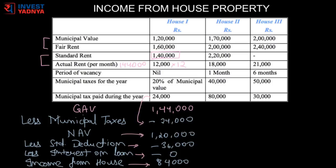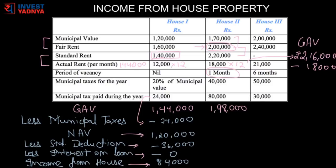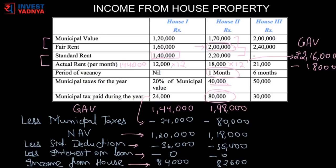In the second scenario, the ideal rent should be the higher of these, which is Rs 2,00,000 as standard rent is higher. But actual rent is Rs 18,000 x 12, which is Rs 2,16,000, and this is higher than Rs 2,00,000, so it should be taken as gross annual value. But there is one month's rent loss due to vacancy, and hence Rs 18,000 should be deducted, making the final gross annual value Rs 1,98,000.